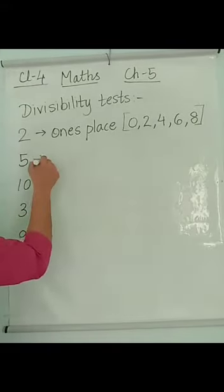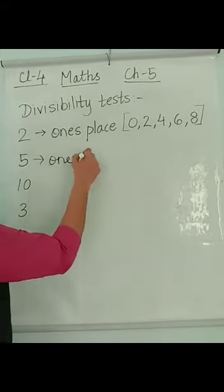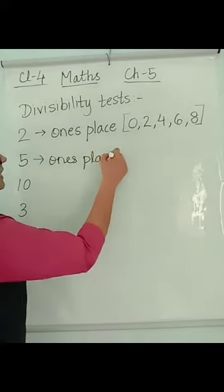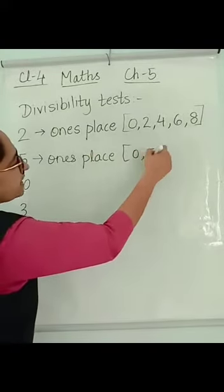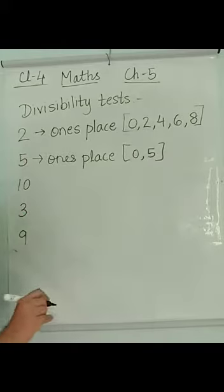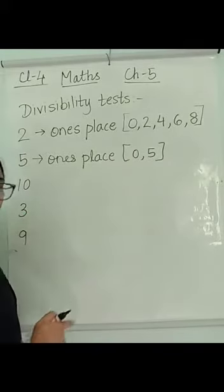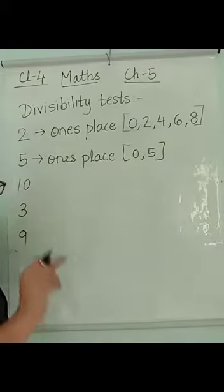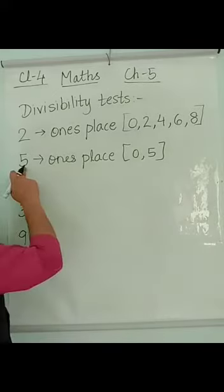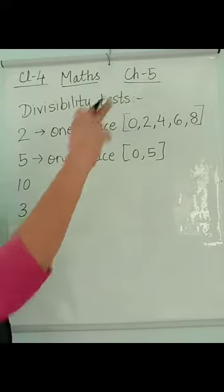For 5, I have to check the ones place and check whether the ones place is having 0 or 5. It should have 0 or 5 in the ones place. If yes, then that number will be completely divisible by 5.